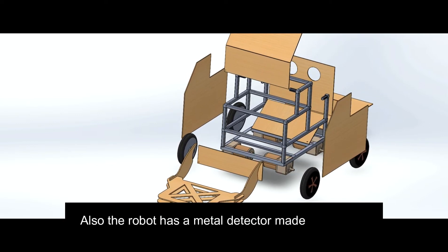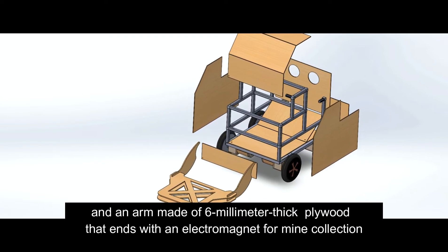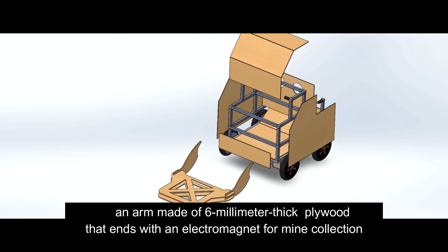Also, the robot has a metal detector made of plywood and an arm made of 6mm thick plywood that ends with an electromagnet for mine collection.